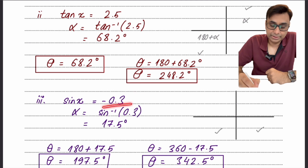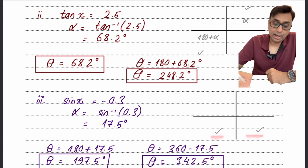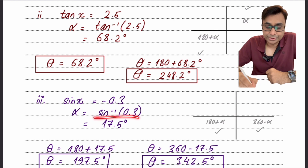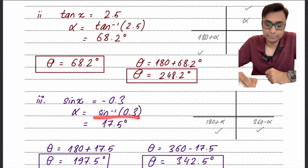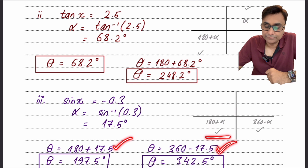For sin x equals negative 0.3: since sine is negative, the possible quadrants are the third and fourth. In the third quadrant the angle is 180 plus alpha, and in the fourth it is 360 minus alpha. Taking sin⁻¹(0.3) — discarding the negative sign — gives the basic angle of 17.5°. The third quadrant answer is 180 plus 17.5 and the fourth quadrant answer is 360 minus 17.5.